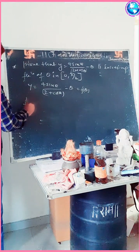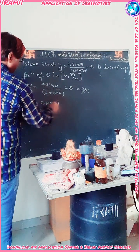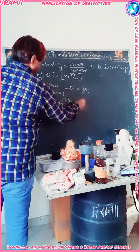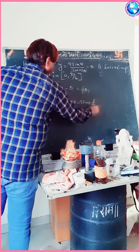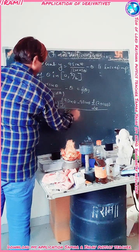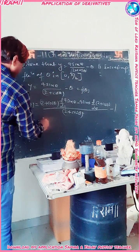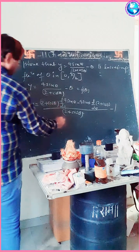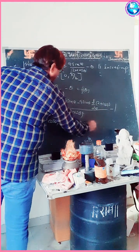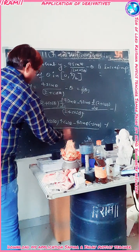Differentiating, we get f'(θ) = d/dθ of a quotient u/v. Using the quotient rule: (2+cosθ)·d/dθ(4sinθ) minus 4sinθ·d/dθ(2+cosθ), all divided by (2+cosθ)². Since 2 is constant its derivative is 0, and the derivative of cosθ is −sinθ, so we subtract 1 for the −θ term.